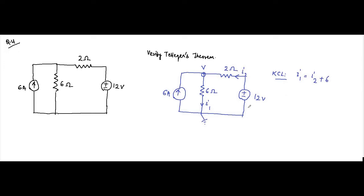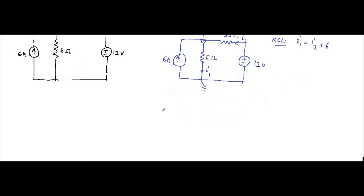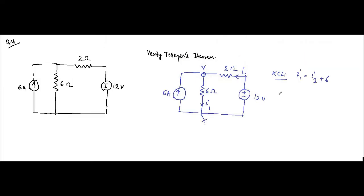Now we write the equation in terms of node voltage and resistance. I1 is simply V divided by 6 — that is, the node voltage minus ground potential (0) divided by the 6 ohm resistance. I2 is (12 minus V) divided by 2. Substituting: V/6 = (12 minus V)/2 + 6, which gives V/6 + V/2 = 6 + 6.